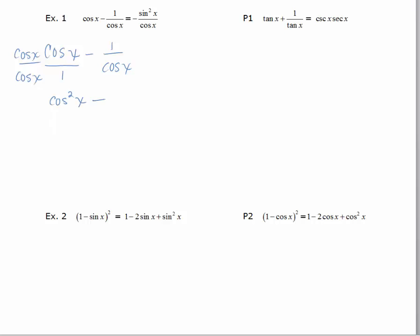The LCD is cosine x so I'll multiply by cosine x over cosine x which gives me cosine squared x minus one over cosine x. And we'll look at the cosine squared x minus one and see if we can come up with a substitution for that.